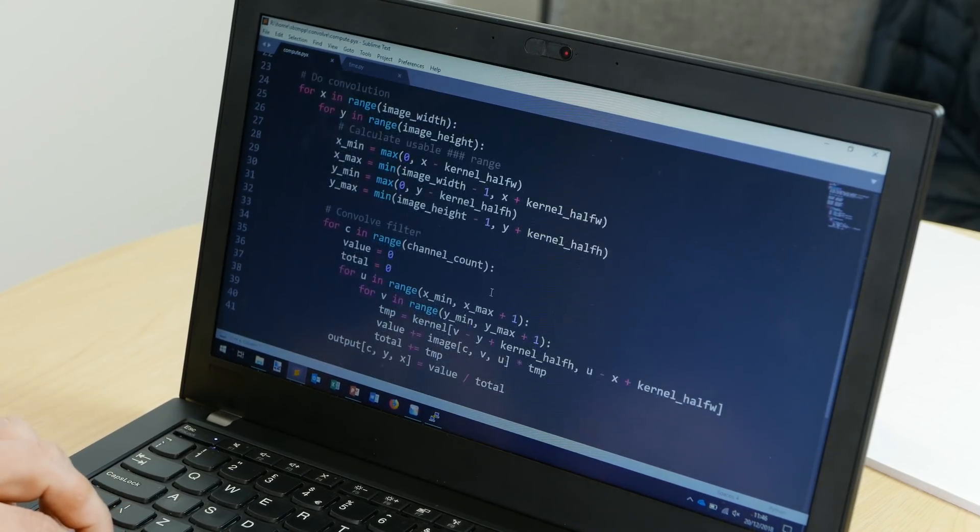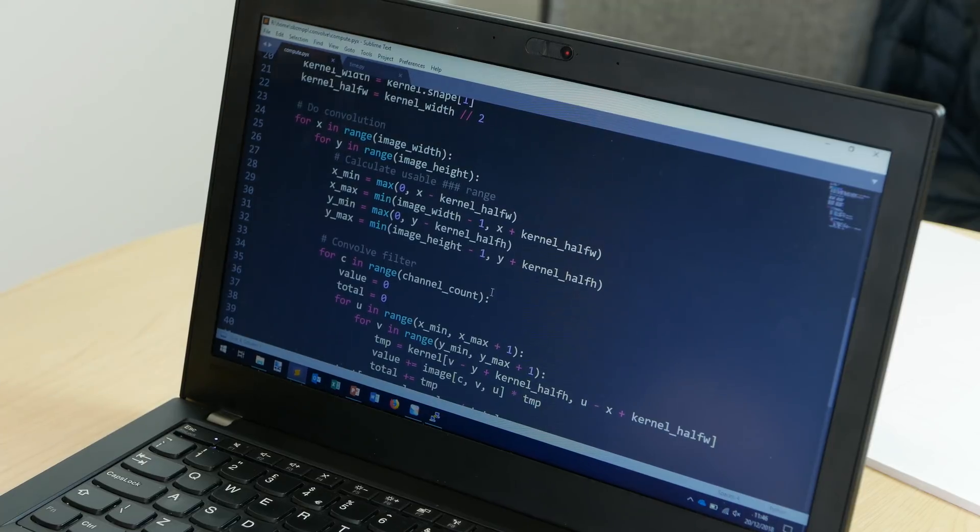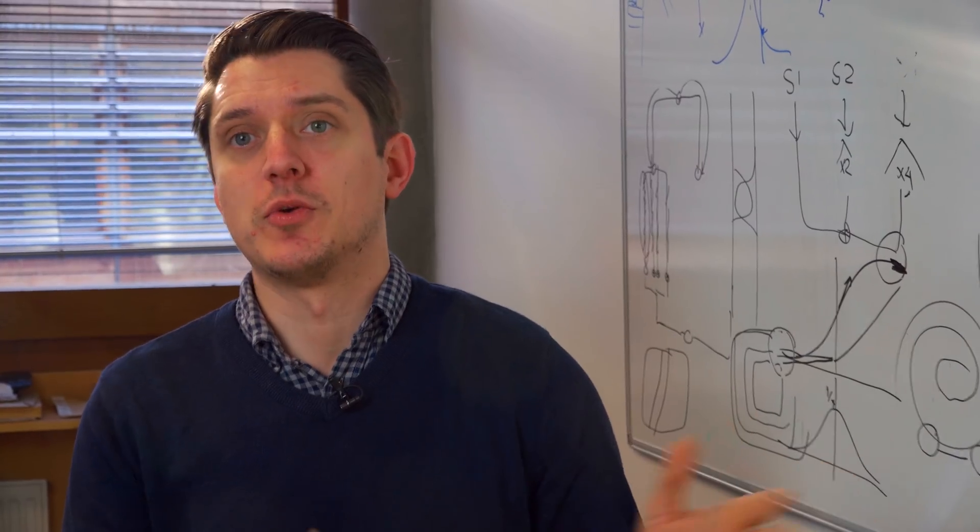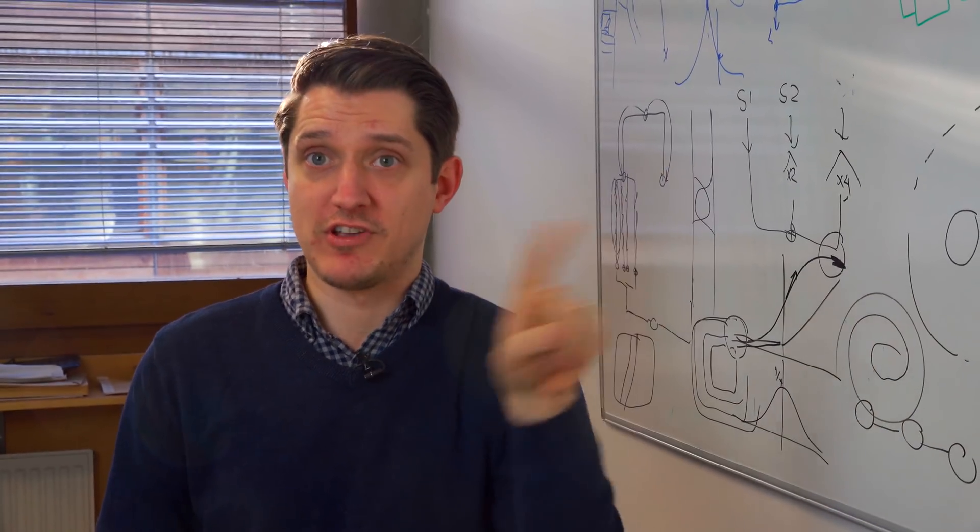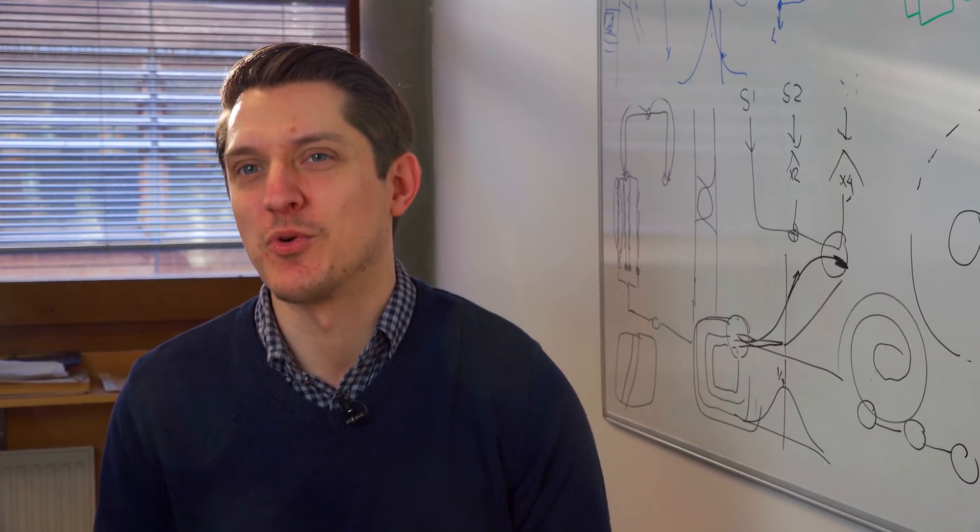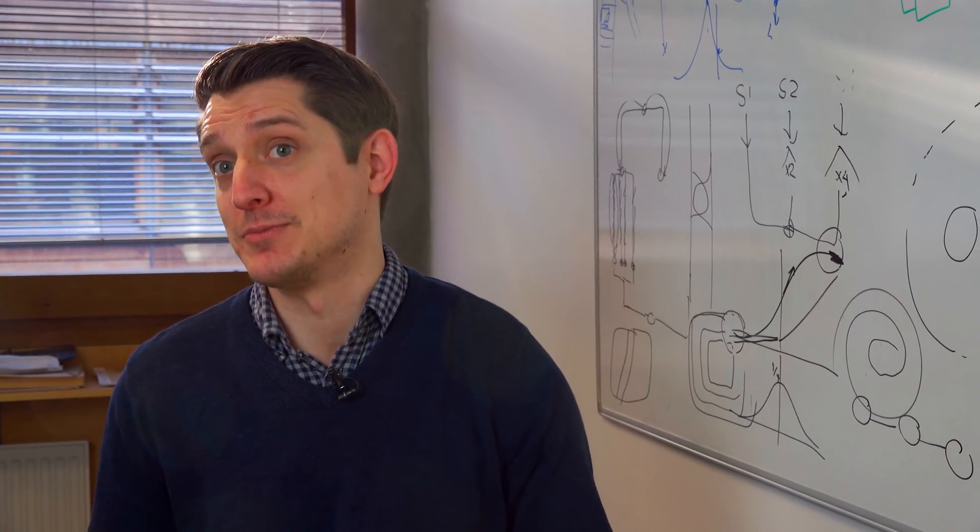All it does really is it takes an image, calculates the overlap between the kernel and the image so that we don't go out of bounds, and then it just does a very quick sum product. There are probably faster ways to do it. I wasn't obsessing, I was just trying to make it reasonably quick.